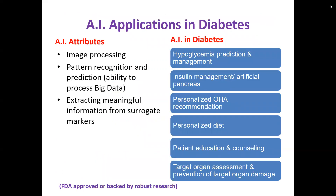In diabetic patients, artificial intelligence helps with hypoglycemia prediction and management — the best example being the insulin pump with continuous glucose monitoring. In advance, it can predict that hypoglycemia is approaching and insulin delivery can be minimized, then restarted when sugar comes back. The 780G is the best example of an artificial pancreas using AI in diabetes management.